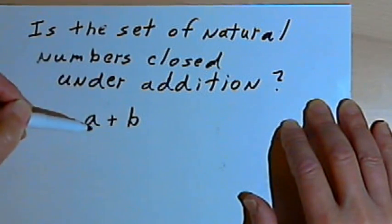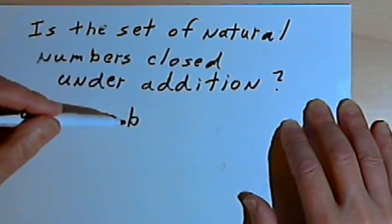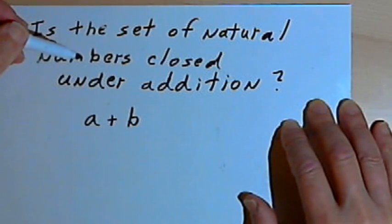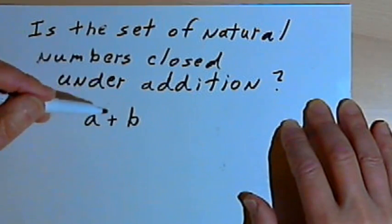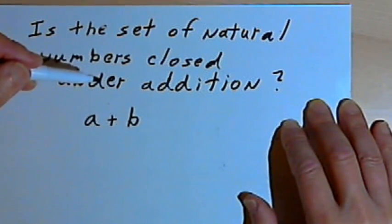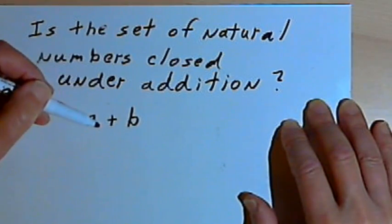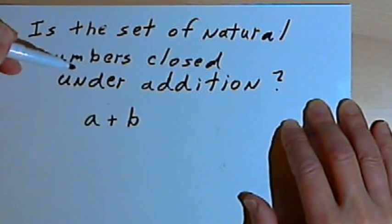I do some operation using those members of the set. Will the result also be a member of the set? In other words, will I be able to stay inside that set when I write my answer? If I can, then we can say that the set is closed under that operation.